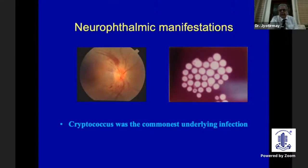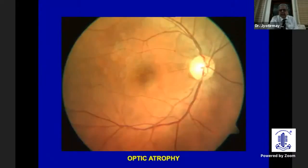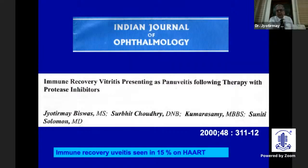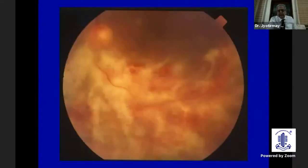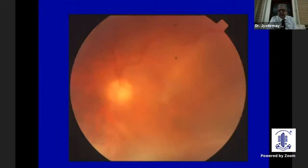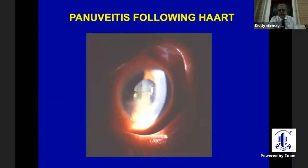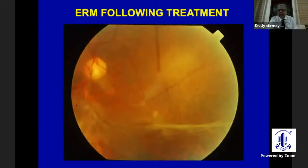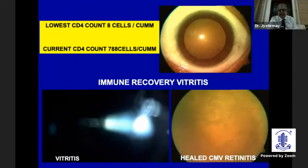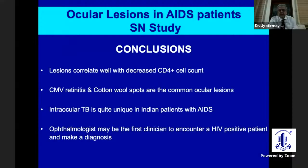Neuro-ophthalmic manifestations include papilledema with peripapillary hemorrhage — vitreous biopsy in such a case showed cryptococcus organisms on Indian ink preparation. One can also have optic atrophy with neurological and cerebral involvement of HIV. A very peculiar condition in HIV-positive patients is immune recovery vitritis, seen in 15% of patients on highly effective antiretroviral therapy. CMV retinitis can respond to treatment, but once protease inhibitors are started, pan-uveitis can occur, which responds to steroids, though epiretinal membrane formation may result. This happens because the rising CD4 count triggers immunologic reactions causing pan-uveitis.